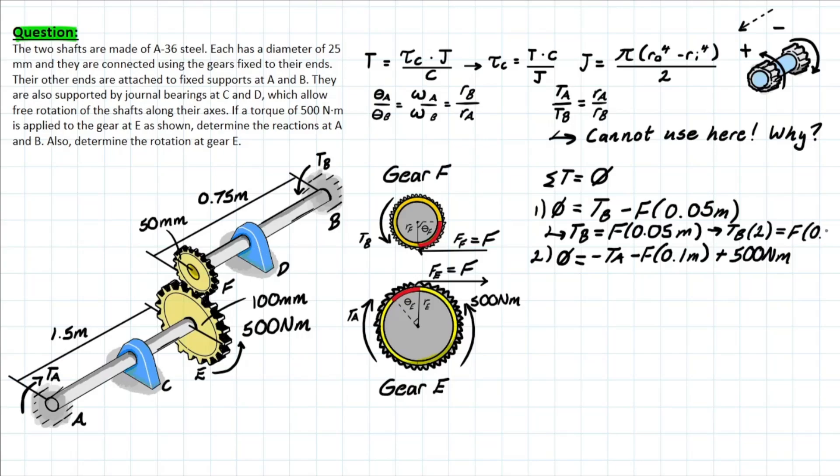To say, wait a minute, 2TB is equal to F times 0.1, right? So we can simply write that, which means we can then plug it in to our equation down here. Plugging that in, we are going to have −TA + 2TB + 500. And now we can isolate for a variable, which would be TA in terms of TB, which will be TA = −2TB + 500.